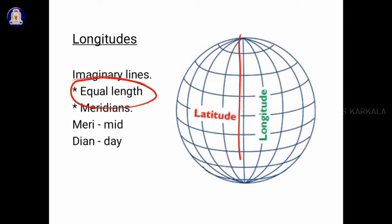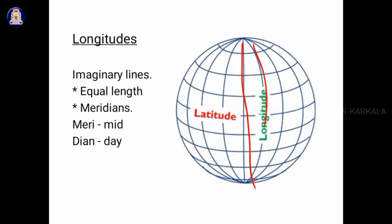Lines joining north to south are called longitudes. All lines of longitudes are of equal length — whereas the equator is the longest latitude and other latitudes are shorter, all longitudes are of equal length. These longitudes are also called meridians.